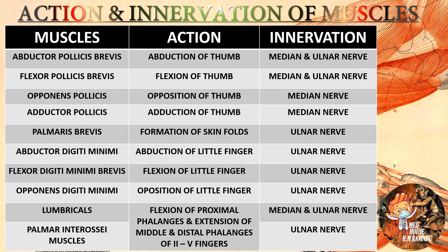Abductor pollicis brevis action is abduction of thumb, innervated by median and ulnar nerve. Flexor pollicis brevis action is flexion of thumb, innervated by median and ulnar nerve. Opponens pollicis action is opposition of thumb, innervated by median nerve. Adductor pollicis action is adduction of thumb, innervated by median and ulnar nerve. Palmaris brevis action is formation of skin folds, innervated by ulnar nerve.